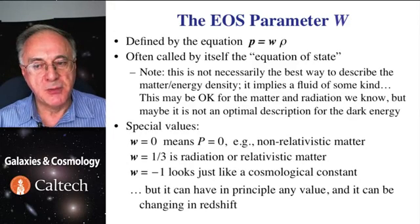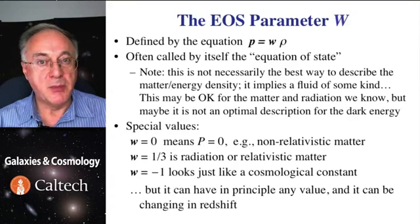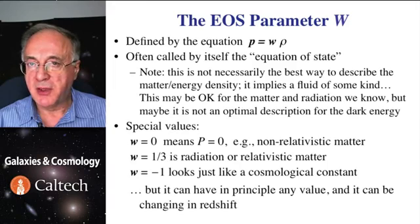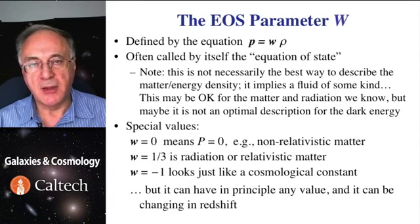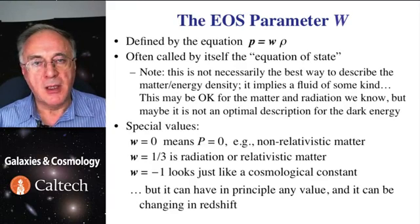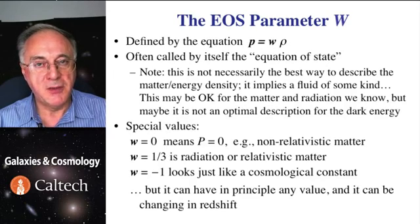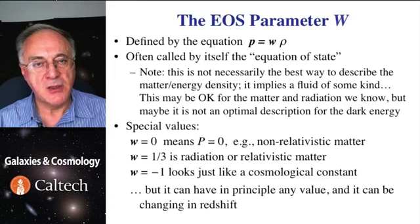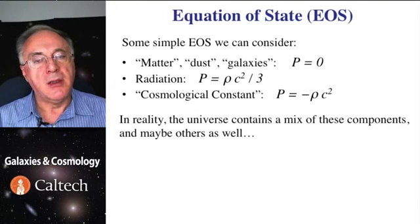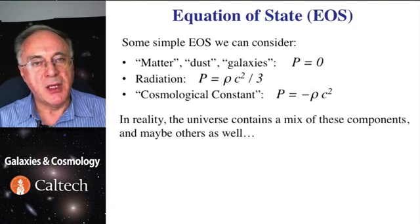So there are some special values. W of zero means that pressure is zero, and that's for non-relativistic matter - just galaxies or atoms that do not interact other than gravitationally. W of one-third corresponds to radiation, photons or relativistic particles of some kind. And W of minus one corresponds to a constant energy density that doesn't change even though the universe does expand, and that is suitable for cosmological constant. So let us consider these three simple cases: matter, radiation, and cosmological constant.